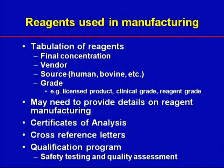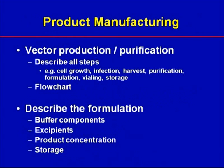You should provide a complete and detailed description of all steps in manufacturing your product. For a viral vector, this would include cell growth, infection, viral harvest, and additional steps such as purification, formulation, filling, and storage. It's very helpful to provide a flow chart in addition to the written description. For the final formulation, all components need to be completely described.